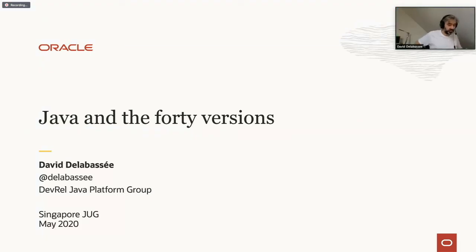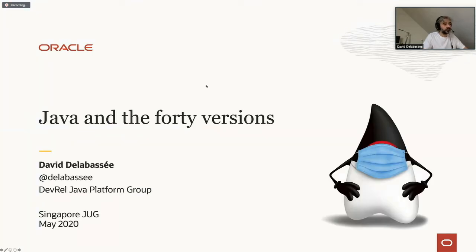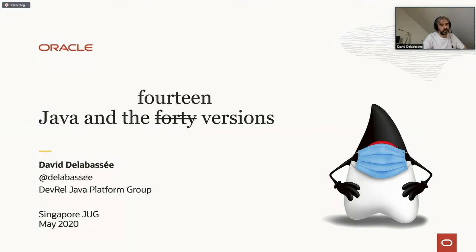Thank you. I was supposed to come back in June, but anyway, thanks for having me. Despite the current situation, I'm very happy to give this remote presentation. The title of the session is 'Java in the 4T version' — and I'm French-speaking, so I always confuse '4T' and '14'. Given that we just released version 14 of Java, that's what I'm going to talk about today. I'll also discuss Java 15, which will come later this year in 2020.